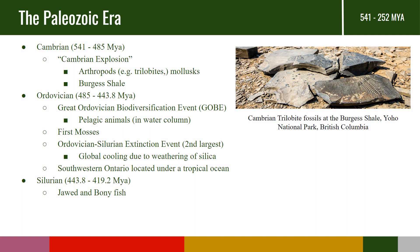It is important to note that starting in the Ordovician and going into the Devonian, we see that the Michigan basin, which includes part of southern Ontario, was covered under a tropical ocean. Much of the bedrock that can be found in southern Ontario was formed during the span of time from the Ordovician to the Devonian. Rocks in more northern Ontario, for example, were formed much earlier in the Precambrian—the Canadian Shield.